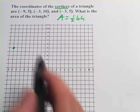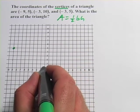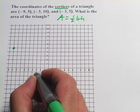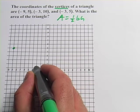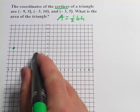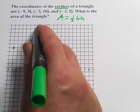That's one of them. And then we've got negative 3, 10. 1, 2, 3, and 1, oh, we've got to go up to 10. 1, 2, 3, 4, 5, 6, 7, 8, 9, 10.